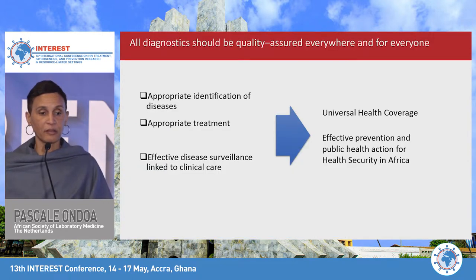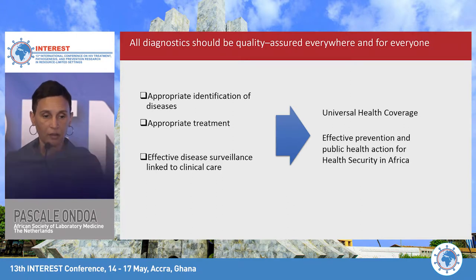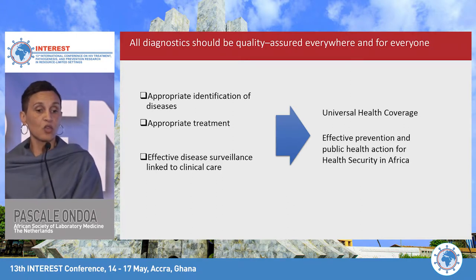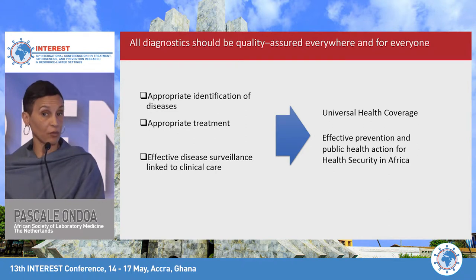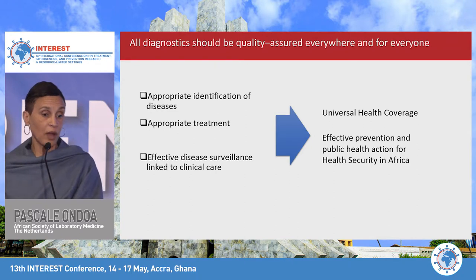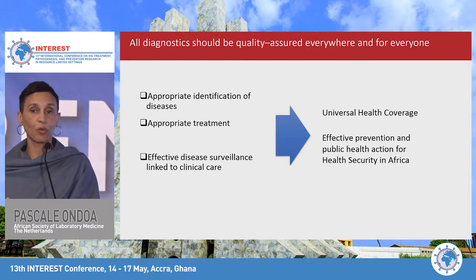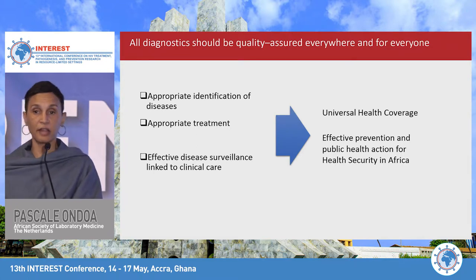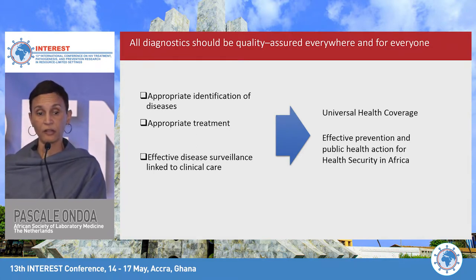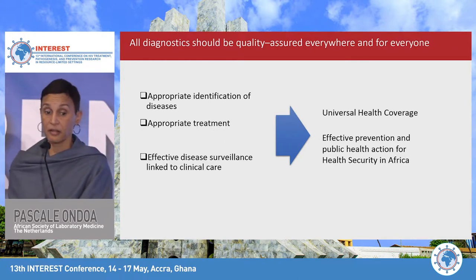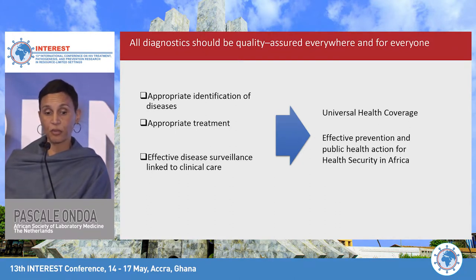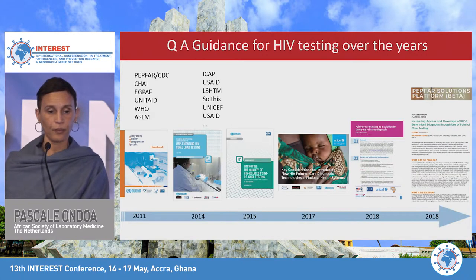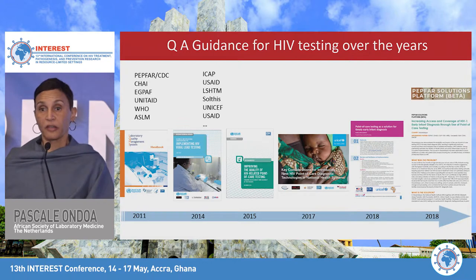Now that the definitions are in place, let's look together at why all diagnostics should be quality assured everywhere and for everyone. What is true for HIV is true for all diagnostics — it allows appropriate identification of diseases, appropriate treatment, effective disease surveillance, and linkage to care. This is about achieving the goals of universal health coverage, effective prevention, and public health action for health security in Africa.